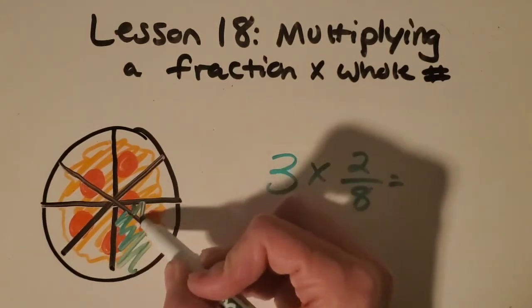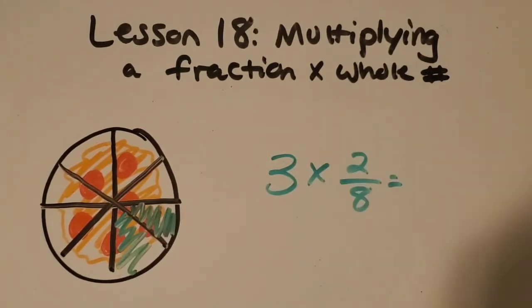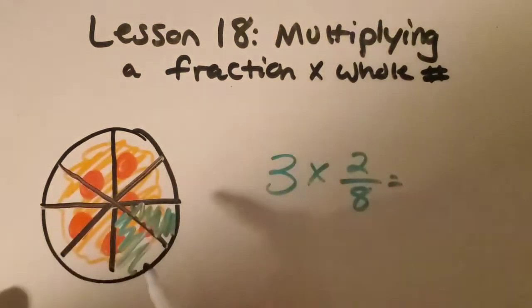And then we can start giving the slices away to the three people. So I'm going to use some different colors just to kind of show the three different people. So here's the first person. They eat two-eighths. So we're going to shade in two of those. Okay, then the next person had two-eighths as well.